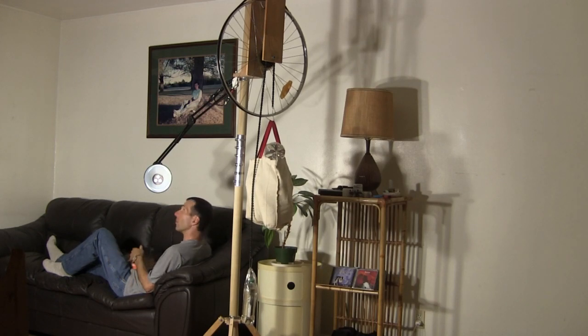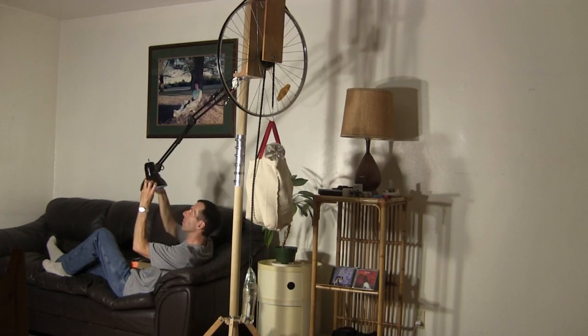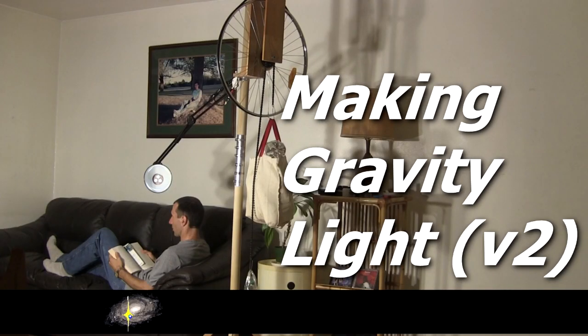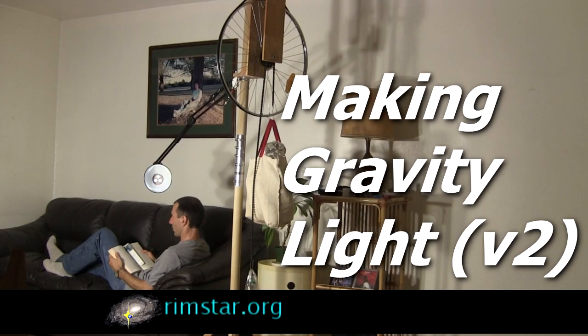Hi gang! This is my Gravity Light version 2. It now runs for around 12 minutes, providing this continuous bright light, perfect for reading. And it also gives off a lot more light than version 1 did. In this video I'll show you how I made it, including the enhancements.